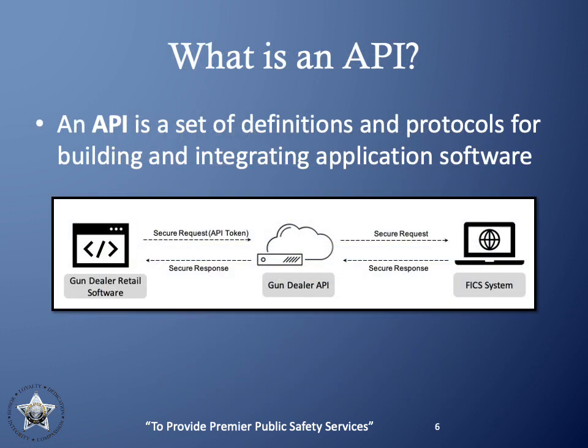To dive deeper into what the gun dealer API is, here is a brief overview of a diagram and the definition of an API. An API is an application programming interface, which is a set of definitions and protocols for building and integrating application software. In our case, the gun dealer API is a service to allow gun dealers' point of sale applications to integrate with the FIX system, performing secure background and firearm checks as mandated by Oregon State law.